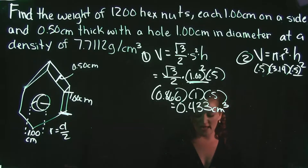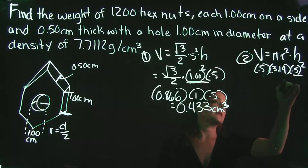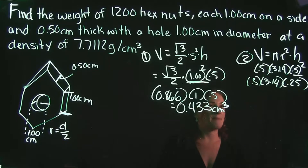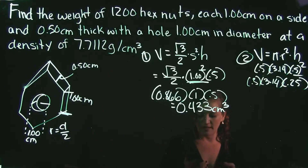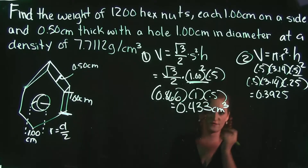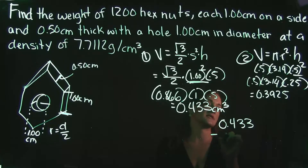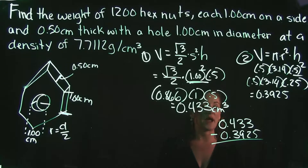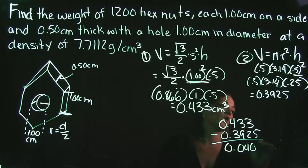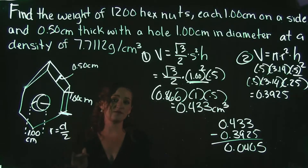Order of operations: 0.5 squared is 0.25. Multiplying 0.25 times 3.14 times 0.5 gives a cylinder volume of 0.3925 cubic centimeters. To find the volume of the hex nut, we subtract: 0.433 minus 0.3925 equals 0.0405 cubic centimeters.